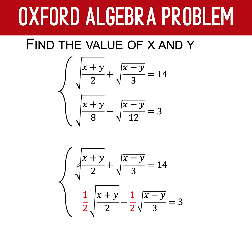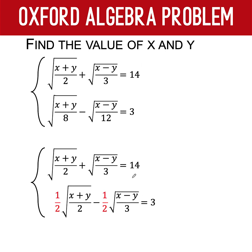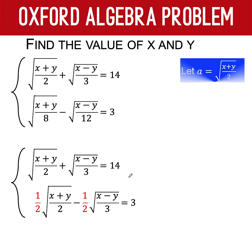Then, let's observe. Notice that you have here the square root of x plus y over 2. And you have the same exact expression at the bottom, the square root of x plus y over 2. Similarly, you have here the square root of x minus y over 3. And that is also exactly this expression here, the square root of x minus y over 3. We can make this equation simpler if you are going to apply variable substitution. We let a be equal to the square root of x plus y over 2. And we let b be the square root of x minus y over 3.